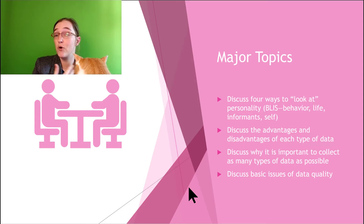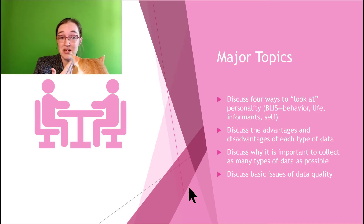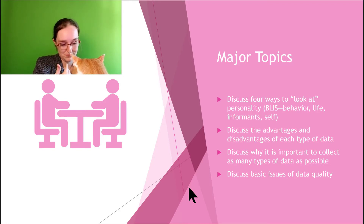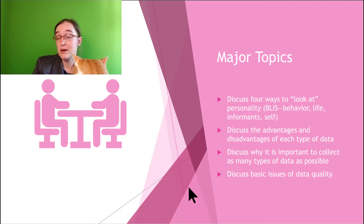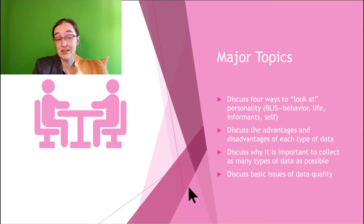We're going to look at four ways to discuss personality type measures. We'll discuss four ways using the acronym BLIS — behavior, life, informant, and self data. There are other acronyms, but this one I like. And we'll discuss the advantages and disadvantages of each type of data, why it's important to collect as many kinds of data as possible, and some of the basic issues of data quality.